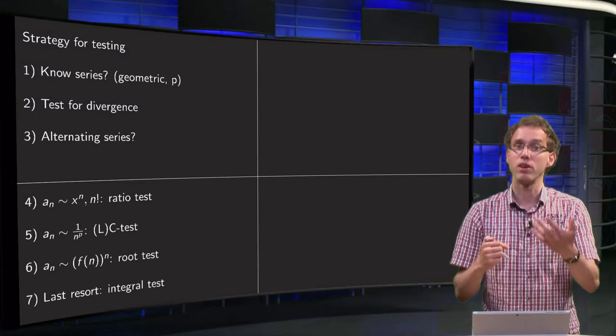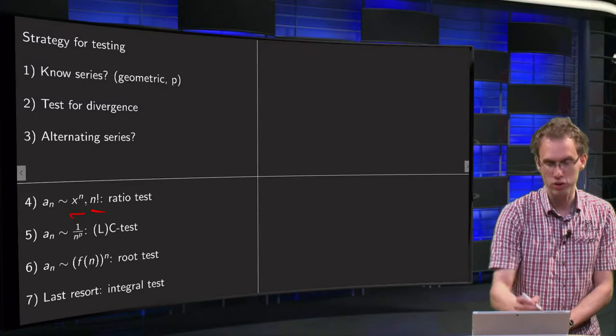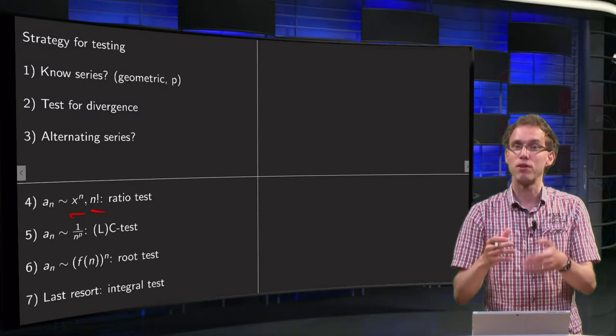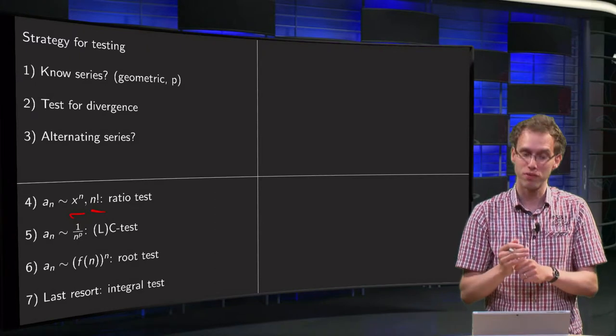then you have to apply one of the other tests. If your terms behave like x to the power n or n factorial, then a(n+1) can be simplified and look like a(n), so in that case the ratio test often works very well.